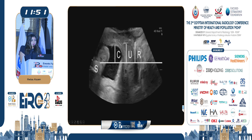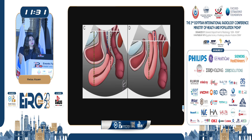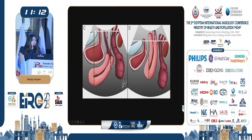We can assess pelvic organ prolapse by drawing this reference line and measuring the distance from it to the organs — the bladder base, the uterus, and the rectal ampulla. For the uterus, we must differentiate between uterine prolapse and cervical elongation. Garcia suggested measuring a line from the inferior border of the symphysis pubis to the uterine fundus during resting and straining. If the difference between resting and straining is more than 15 millimeters, this indicates uterine prolapse; if it is less than 15 millimeters, it indicates cervical elongation.